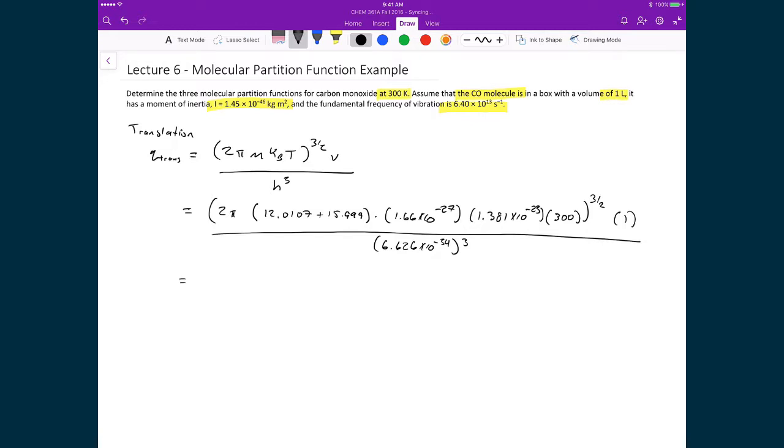What we get is a numerator of 4.21 times 10 to the minus 68 divided by 2.91 times 10 to the minus 100. Doing this division, we get 1.447 times 10 to the 32. So what we can see is that this is a very large number. This large number means that the spacing between energy levels is going to be very small. Basically there's very little energy difference between these energy levels, and hence there are so many that are thermally accessible.